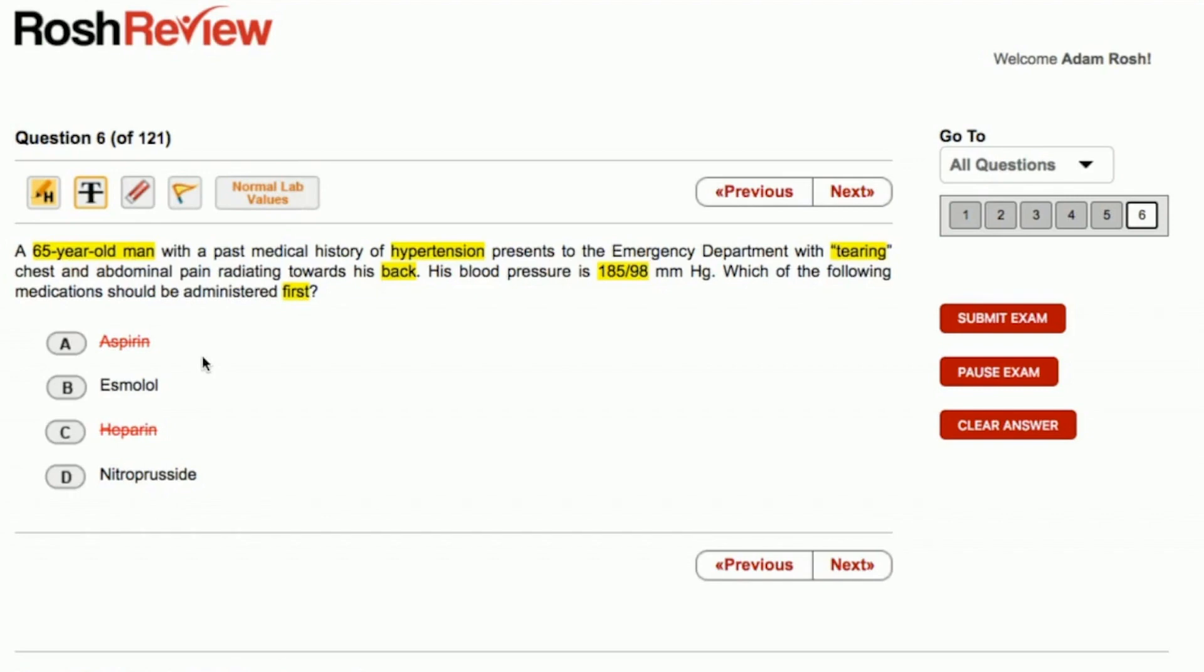And so nitroprusside we know is very commonly used in hypertensive emergencies, and this is one of those. However, nitroprusside leads to a reflex tachycardia. That reflex tachycardia is due to the vasodilation that nitroprusside causes. And the reflex tachycardia is going to lead to an increase in aortic shearing forces. So we want to avoid that.